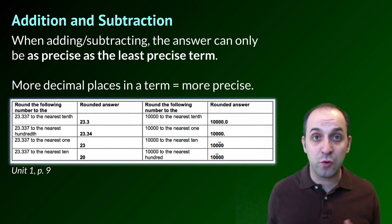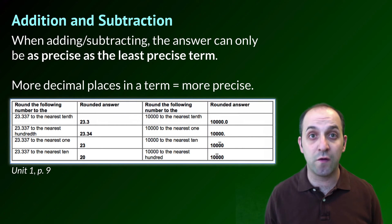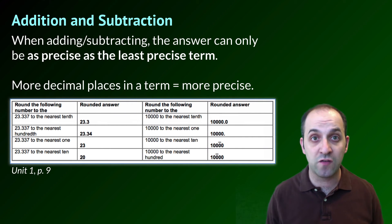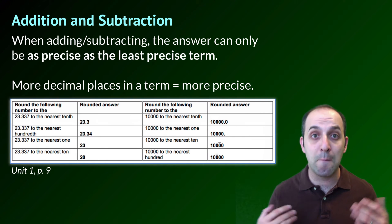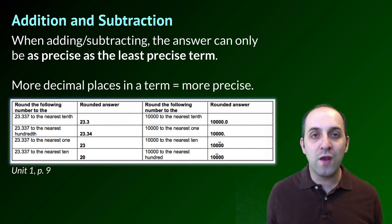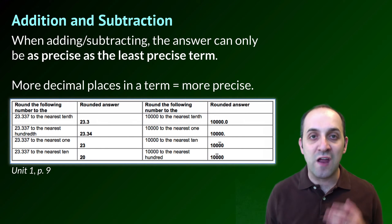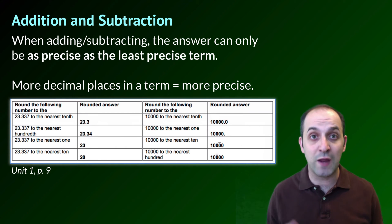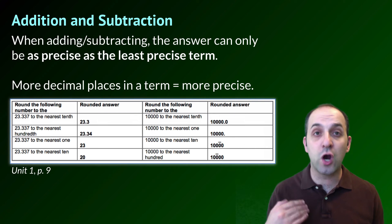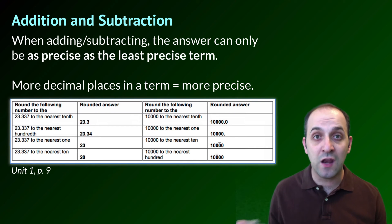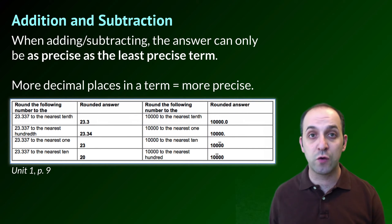This really probably does make sense to you if you think about it, because here in chemistry we're going to be dealing with a variety of units and measurements which have often been taken to different amounts of precision. If we have one number that's more precise than another, we can really only know with certainty to the least precise place that we have information for. Here's a chart from page nine showing the rounding of different numbers to particular degrees of precision.